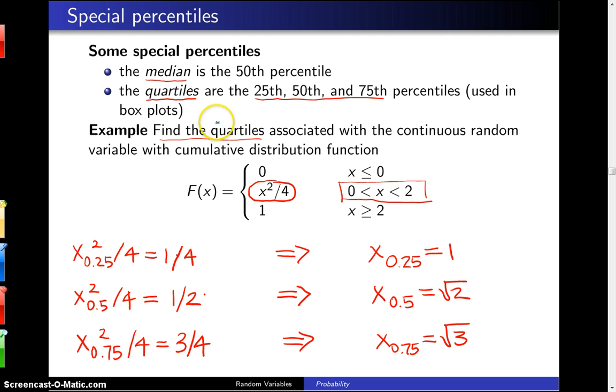So these are the quartiles: the first quartile, the second quartile, and the third quartile, which are the same as the 25th, the 50th, and the 75th percentile of the distribution.